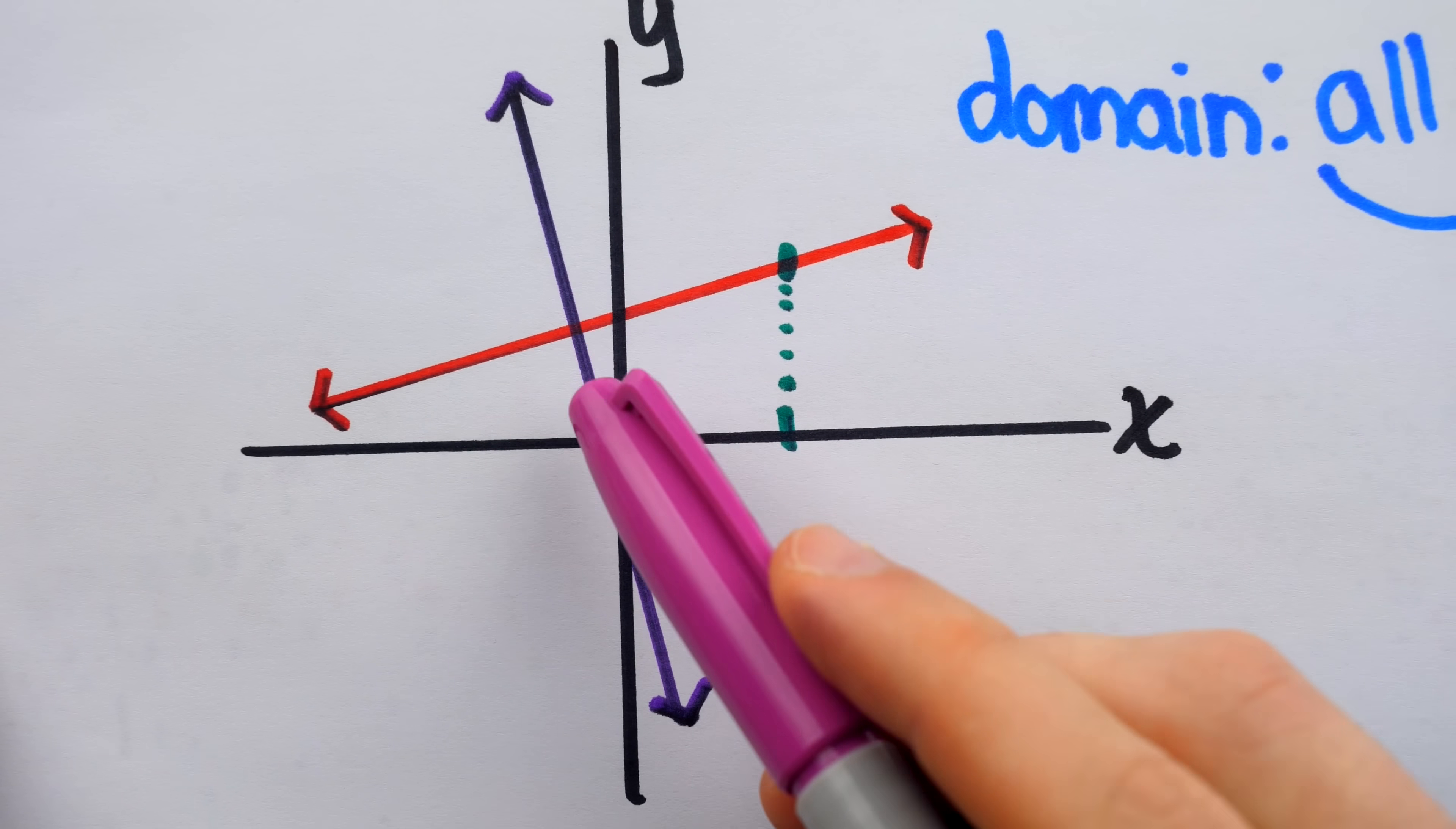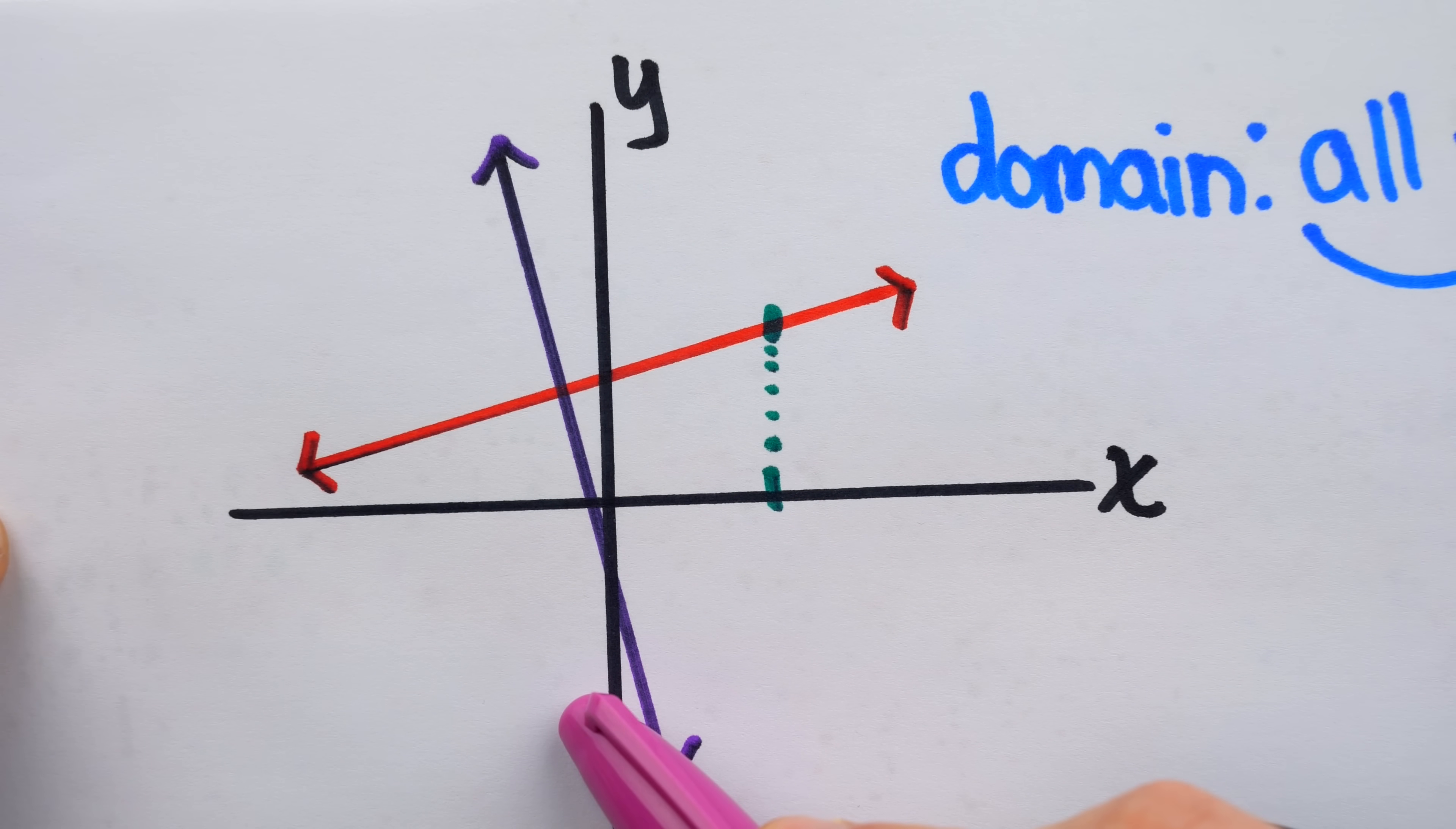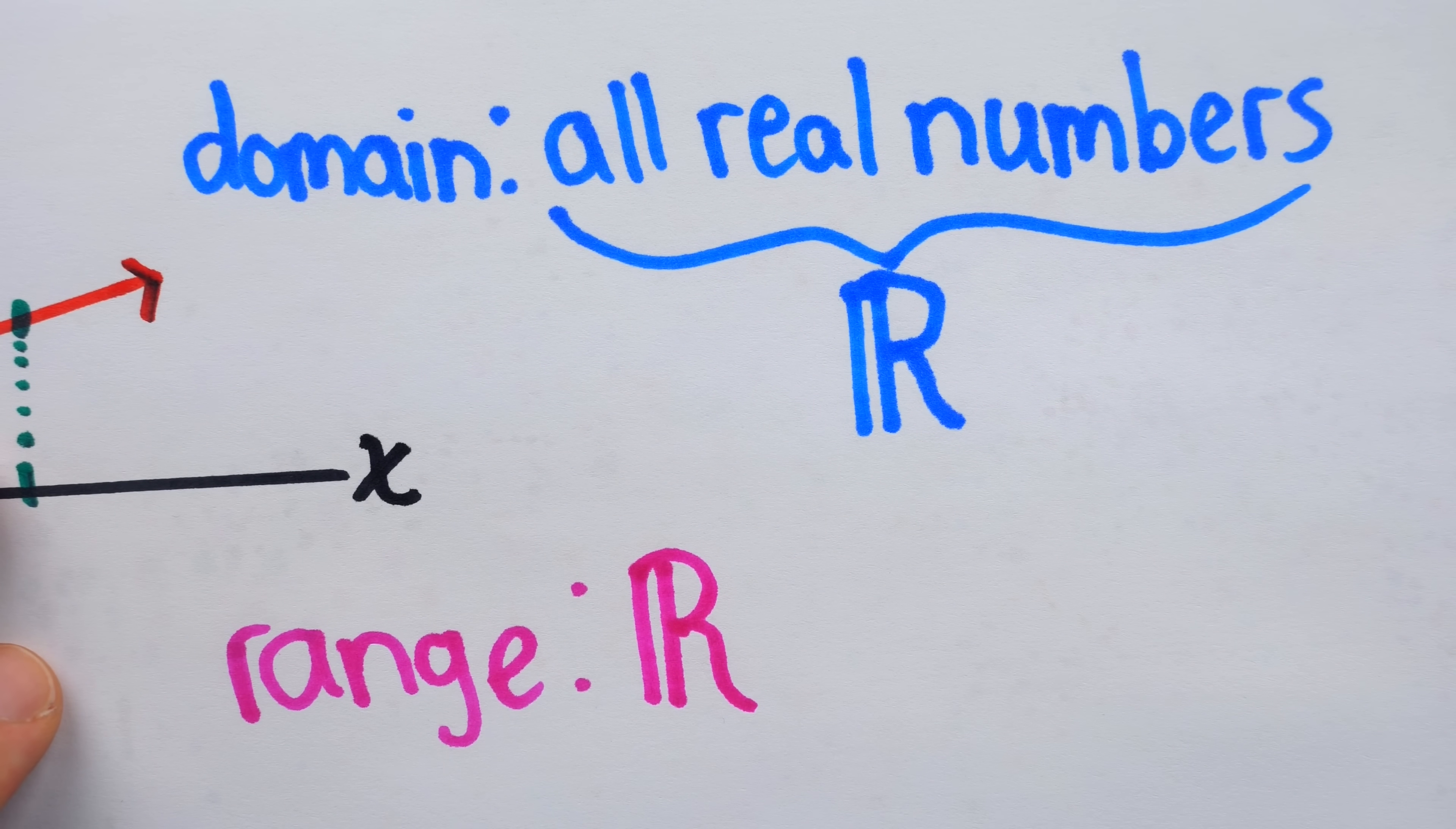but instead of being the x values where the line is defined, the range is the set of y values the line attains. And as you can see, both of the lines go up forever and down forever. So they take on every y value eventually. Hence,